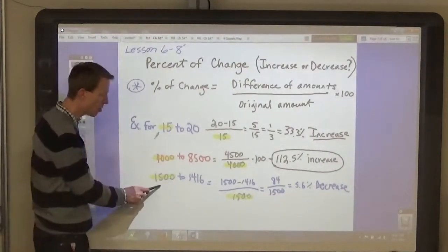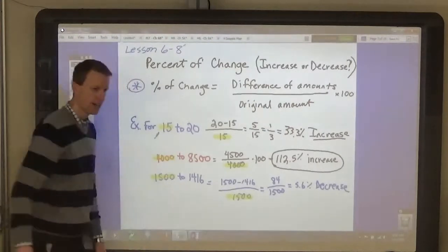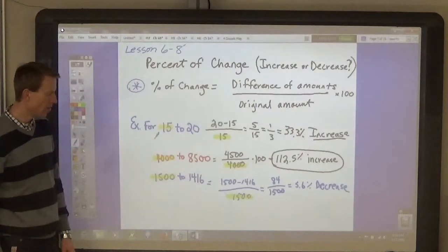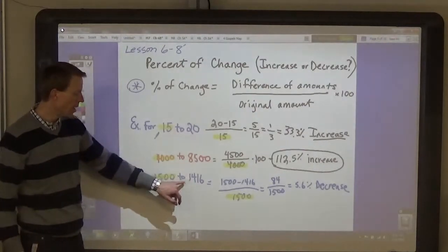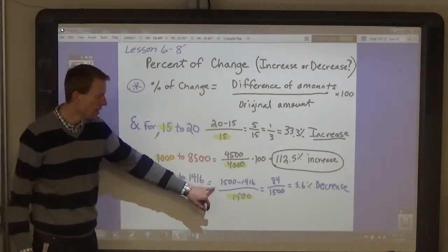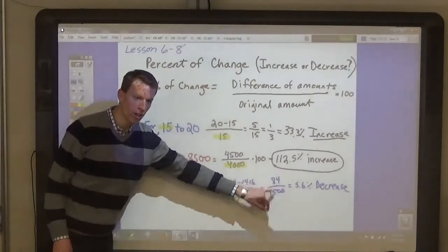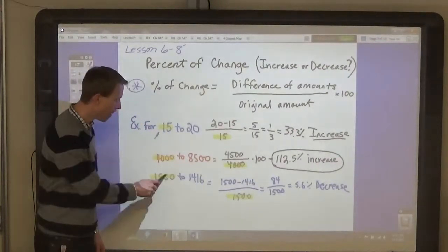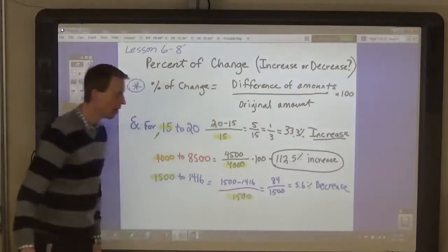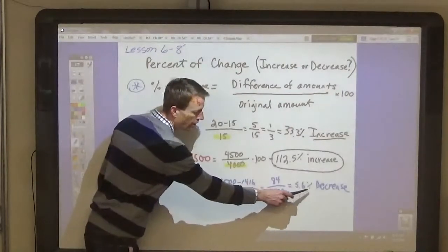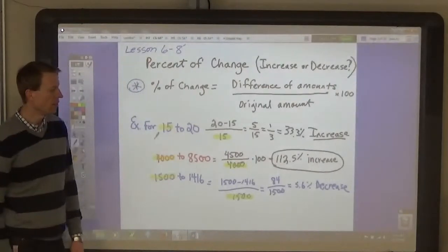Remember, always use the first number as your original amount, the amount you divide by. 1,500 decreased to 1,416. That's a difference of 84. And then divide by the original amount. So 84 divided by 1,500 is a 5.6% decrease.